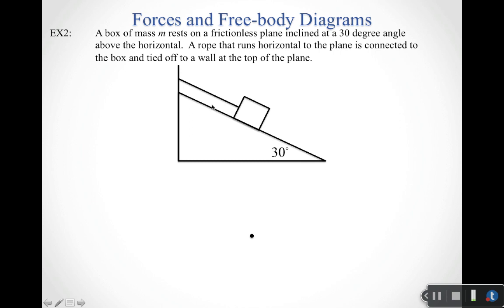Let's do one more example. A box of mass m rests on a frictionless plane inclined at 30 degrees above the horizontal. A rope that runs horizontal to the plane is connected to the box and tied off to a wall at the top of the plane. The box is just sitting there — not moving. Does the box have mass? Yes — draw in a gravitational force pointing down.